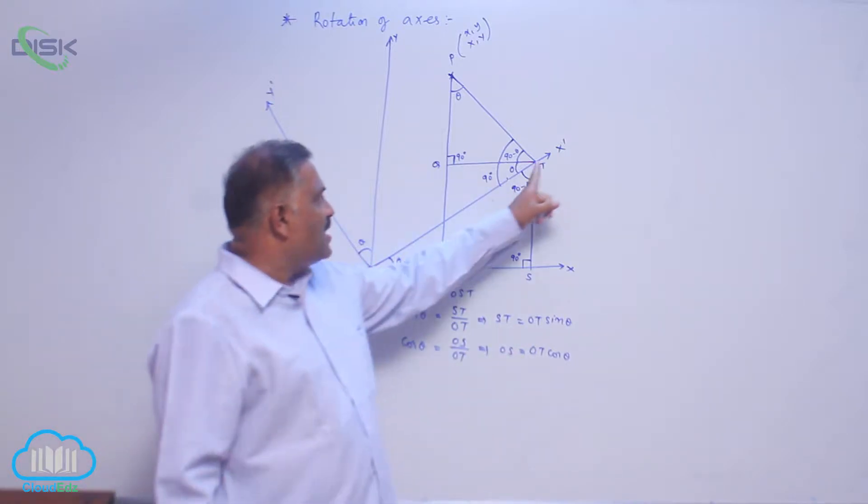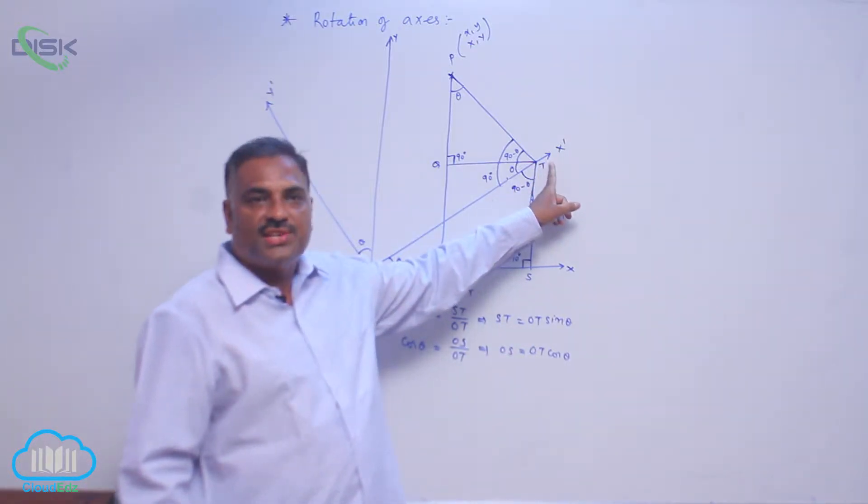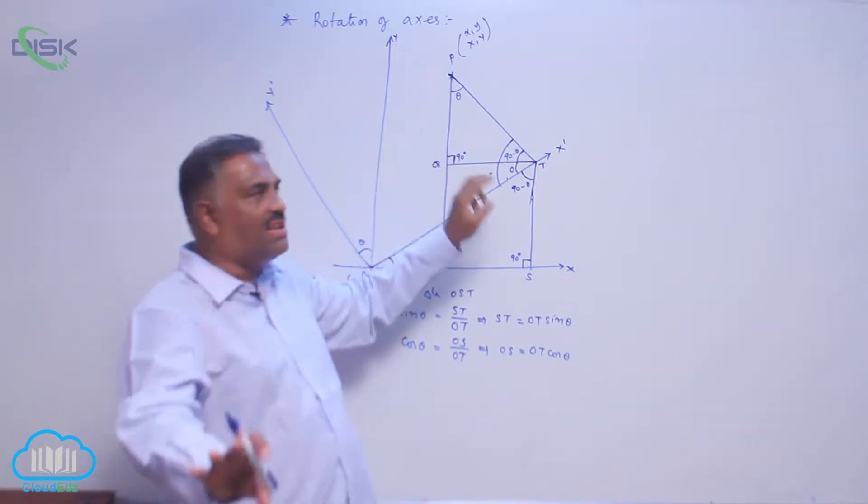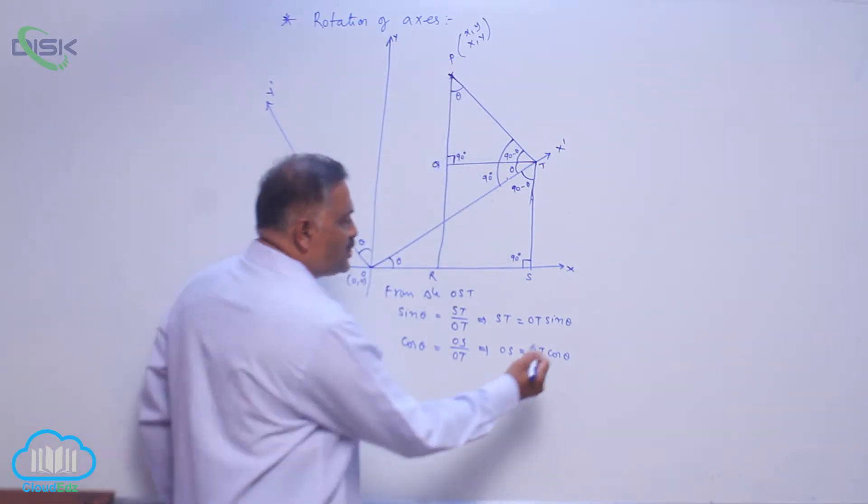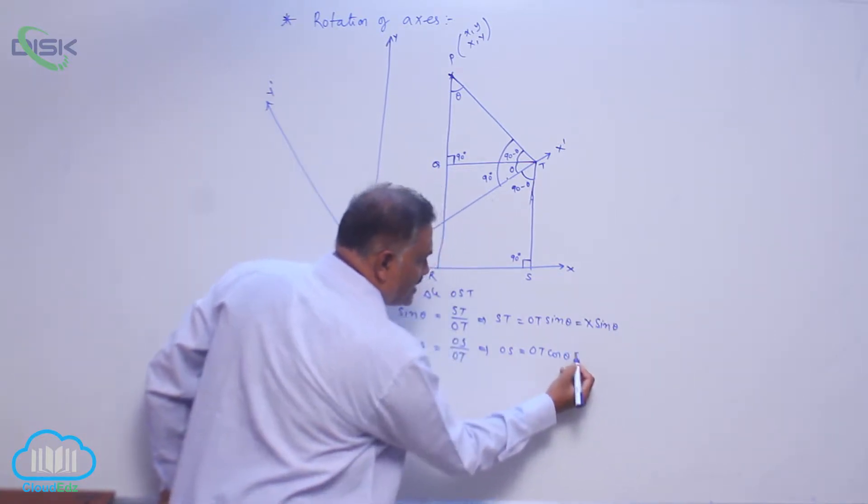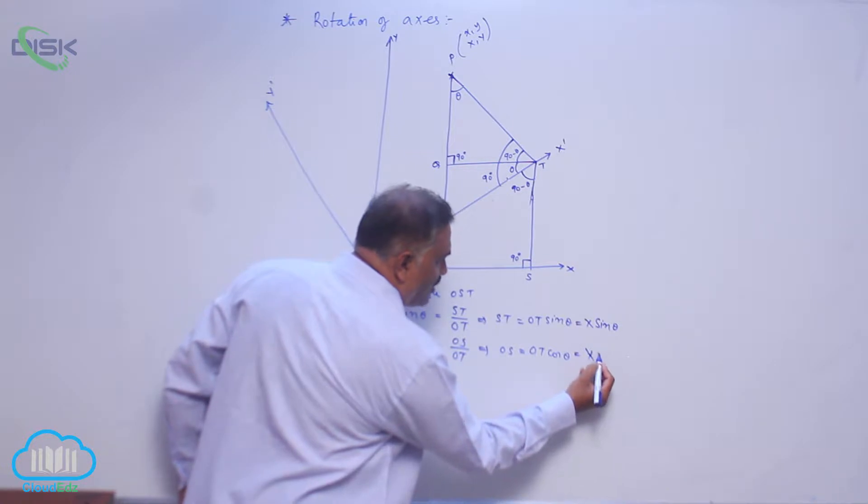You can see that OT is the new horizontal distance referring to point P. The new horizontal distance is nothing but capital X. So this is X sin theta. Now this is Y mean X cos theta.